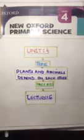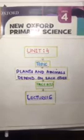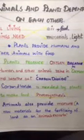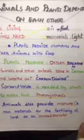Bismillahirrahmanirrahim. Assalamu alaikum dear students, how are you all? I hope you are all fine, good, and safe. I am your science teacher with the science book of level four. We are in unit number four, and today we have a new topic. The topic name is 'Plants and Animals Depend on Each Other,' on book page number 33. This is the sixth lecture of this unit.